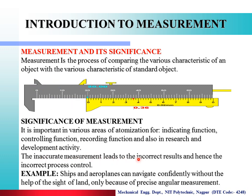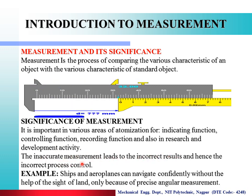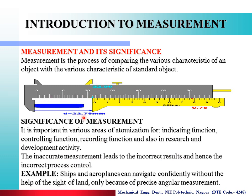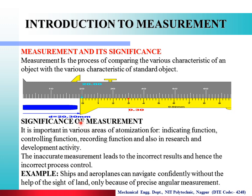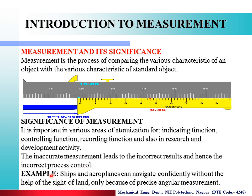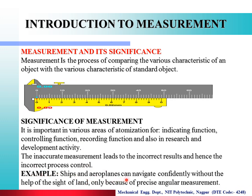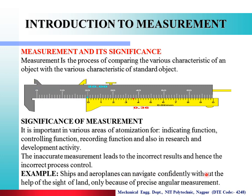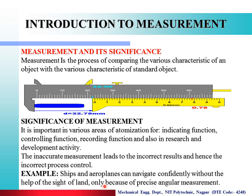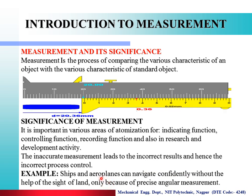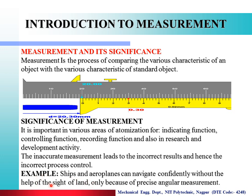Inaccurate measurement leads to incorrect results and hence incorrect process control. Suppose I am making a product in industry which requires 32.96 mm or 20.36 mm, but with inaccurate measurements I may measure it too small or too large — then the quality of the process will be incorrect. Example: ships and aeroplanes can navigate confidently without the sight of land only because of precise angular measurement.